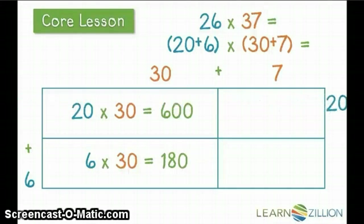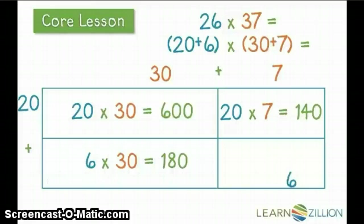In this upper section, we're saying that we have 20 rows or groups with 7 in each group. So the number sentence is 20 times 7, equaling 140. Finally, the bottom section says 6 rows or groups of 7 in each group. So the number sentence says 6 times 7, equals 42.